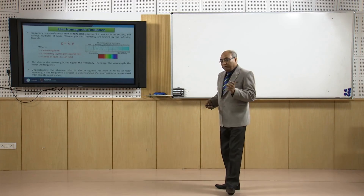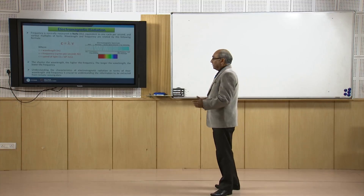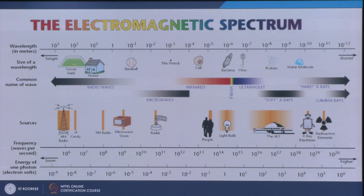One has to remember which part of the visible spectrum we are working in — visible, near infrared, thermal infrared, and so on. The whole spectrum is shown here with longer and shorter wavelengths in meters. Water molecules are very small but do affect things. Different names are given: waves with longer wavelength are called radio waves, then infrared, then visible, then ultraviolet, then X-rays. Remote sensing does not work in the ultraviolet because the energy is absorbed by the atmosphere.